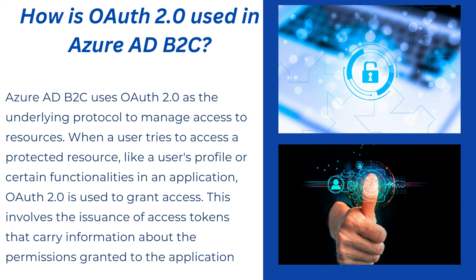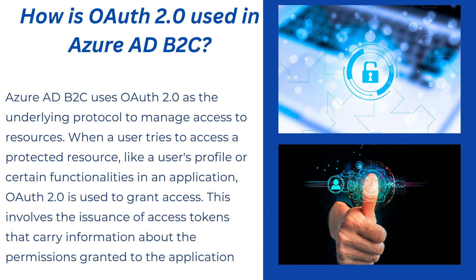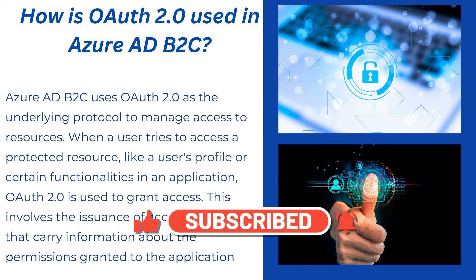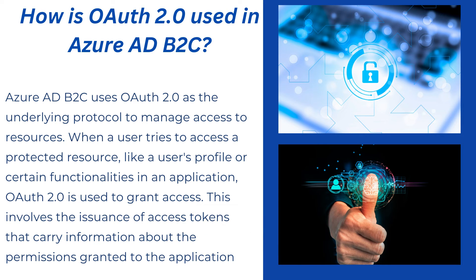Azure AD B2C uses OAuth 2.0 as the underlying protocol to manage access to resources. When a user tries to access a protected resource like a user profile or certain functionality in an application, OAuth 2.0 is used to grant that access. This involves the issuance of an access token that carries information about the permissions granted to the application. The access token contains all information about who you are and what you have access to, in terms of claims.